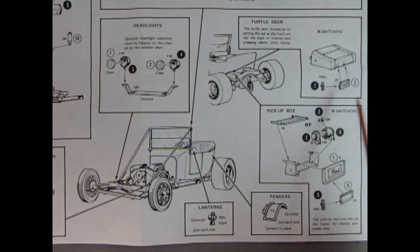Now down here you can also put on this pickup truck box. So here's the little top for that. And there's the box there. Basically just enough to fit in this gas tank in here. And there's the back door and our license plate again and that tail lamp. And then here you can add on these optional fenders, which would go in there. It does say one each side cement in place. Here it says the pickup bed just sits on the frame for display purposes only.